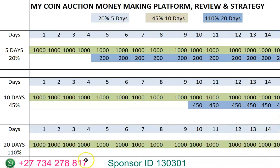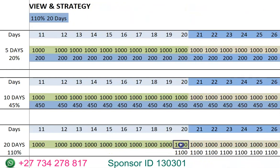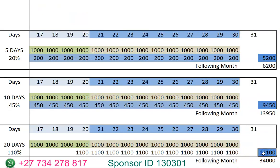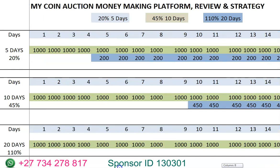For the 20-day variation, which gives 110 percent on top of your money: if you put in 1,000 rand and continue putting in 1,000 rand on a daily basis up to the 20th day, on the 20th day you'll be able to take out 1,100 rand. If you continue, for that month you make 12,100 rand, and if you continue into the next month without stopping, you'll be able to make 34,000 rand as profit on top of your money.